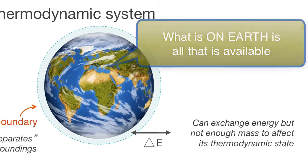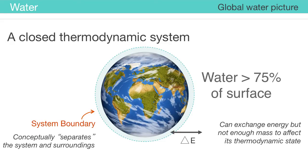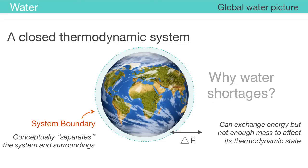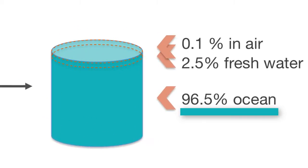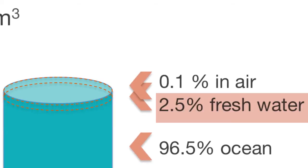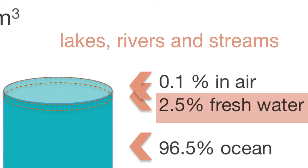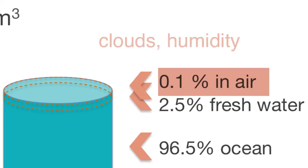Is there a shortage of water? We know that more than 75% of the surface of the earth is covered with water, so why is there any talk of water shortages? The global stock of water is stored in three primary forms. Only 2.5% of this water volume is fresh water from lakes, rivers, and streams, and only about 0.1% of the earth's water is dissolved in the atmosphere.